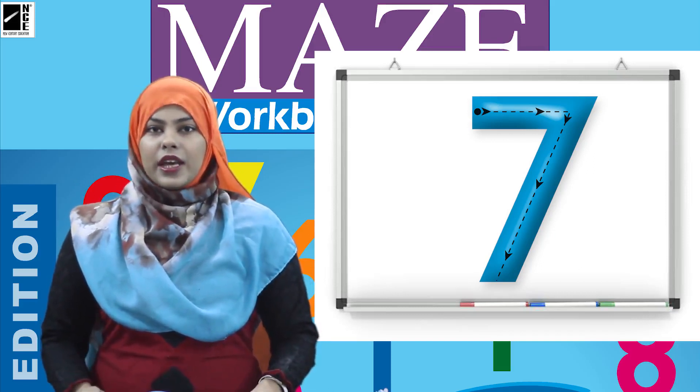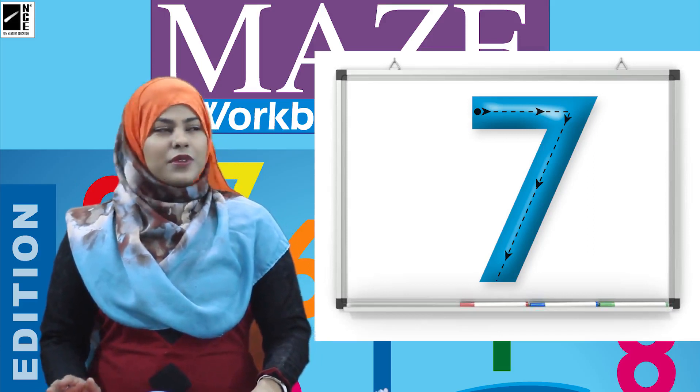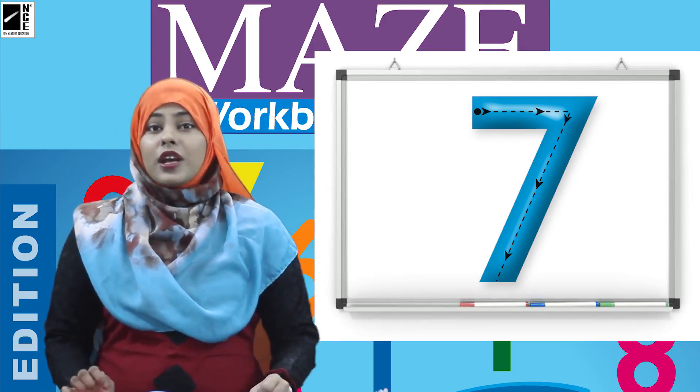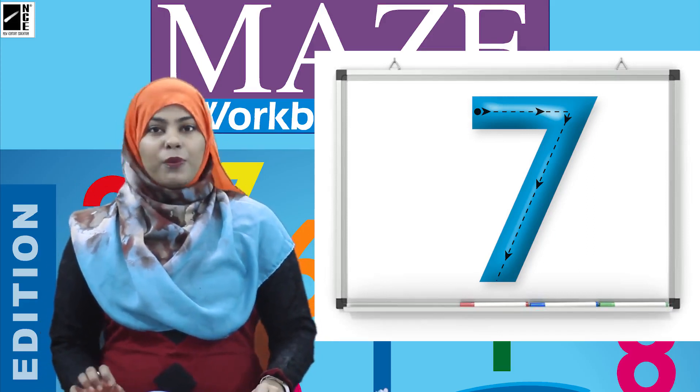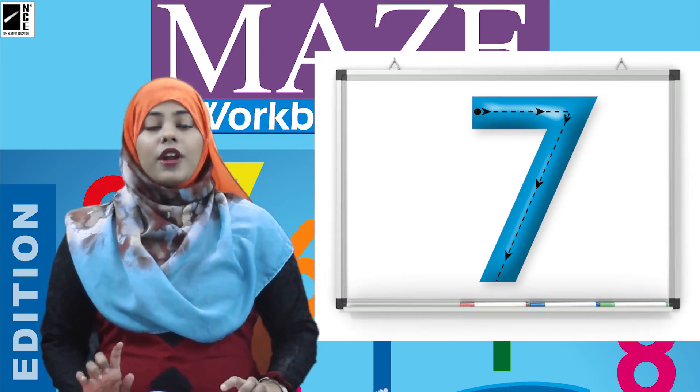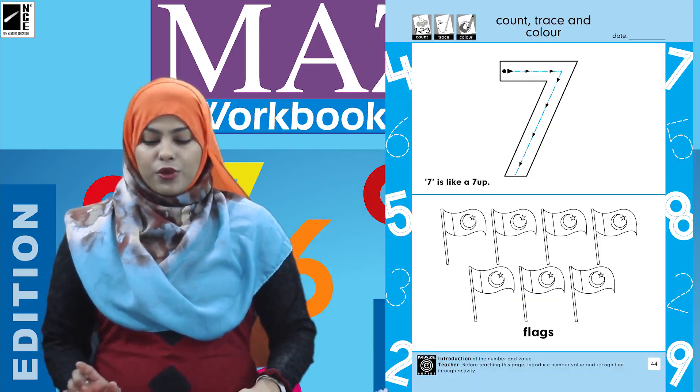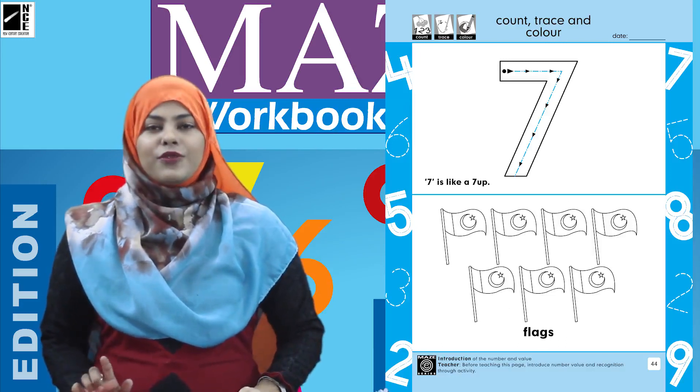To hamne number seven se ab dosti bhi karli hai. To ab kaam karte na, isko thode si help karte hain. Isko humse thode sa kaam hai, to wo kaam hum apni book mein kar lete hain. Thik hai. Now take out your Prayer One Maths book and open page number 44.